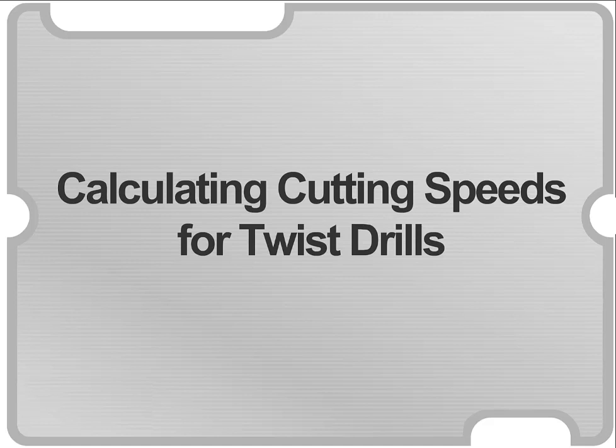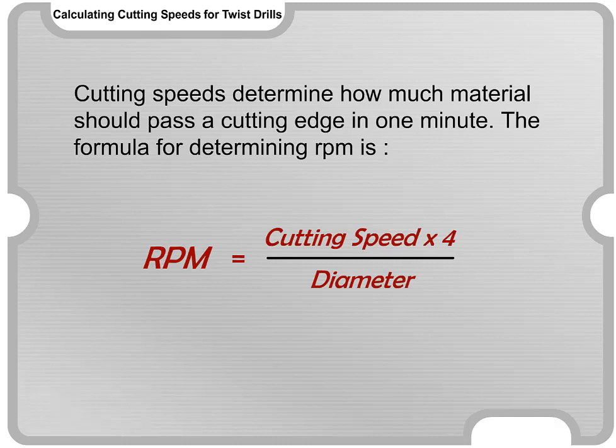Welcome to Calculating Cutting Speeds for Twist Drills. Cutting speeds determine how much material should pass a cutting edge in one minute. The formula for determining revolutions per minute, or RPM, is the cutting speed multiplied by 4 divided by the diameter.